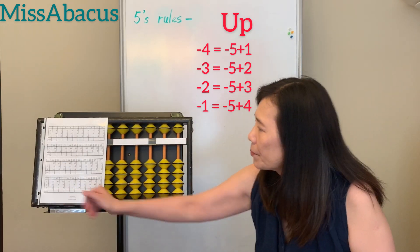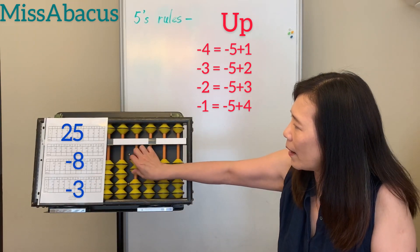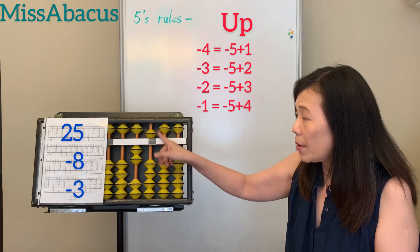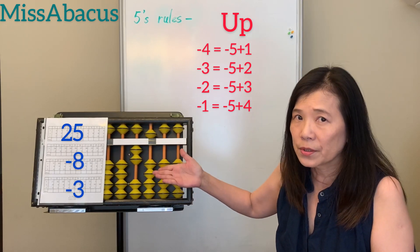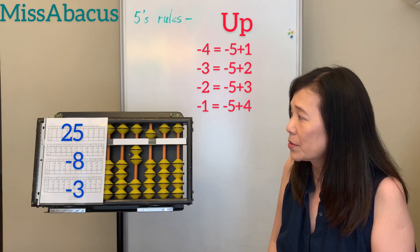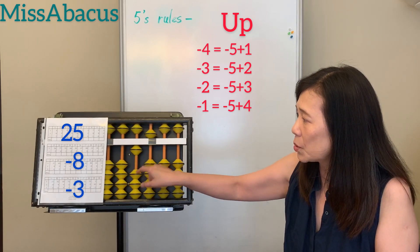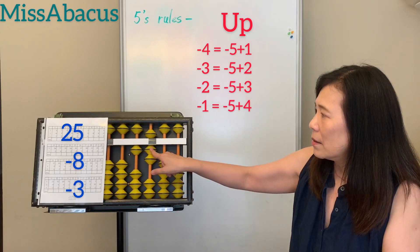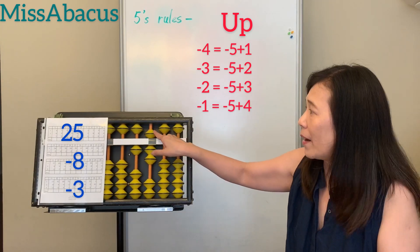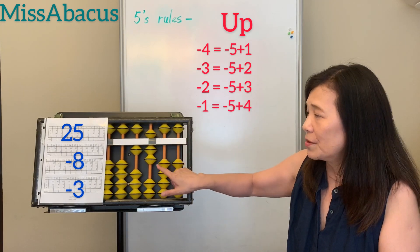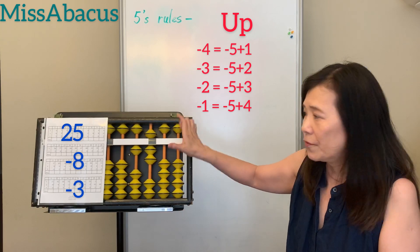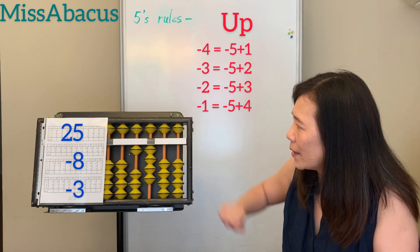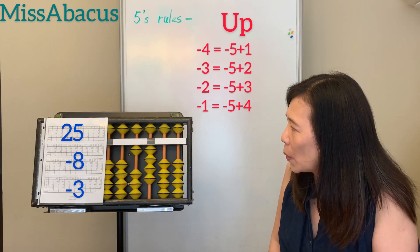Now I want to do the bottom problems with the abacus. 25 minus 8: if you don't have enough beads on the ones place, you need to borrow from the 10. So 10's rule for 8: minus 10, plus 2. Then minus 3: you don't have 2 on the bottom but you have 5 — so up 5, up 2 for the 3. Answer: 14.